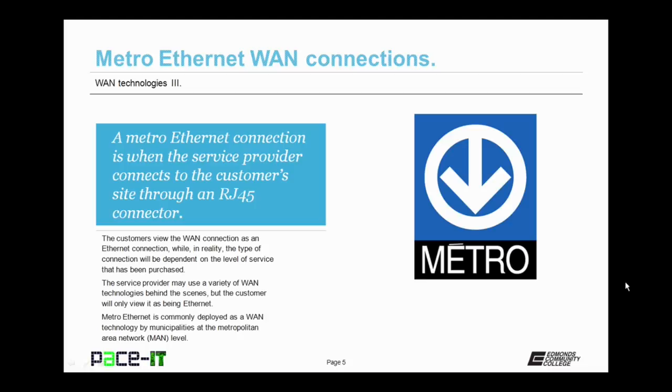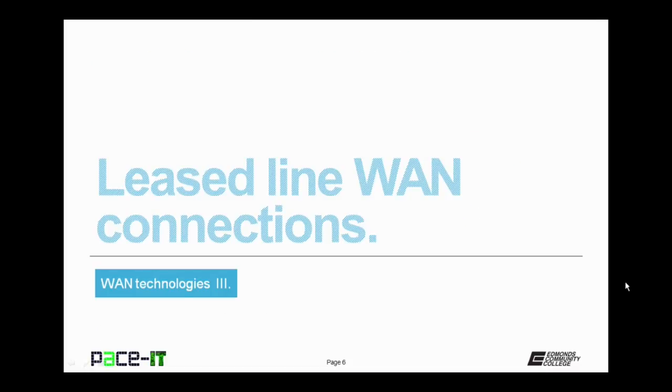The service provider may also use a variety of different wide area network technologies behind the scenes, but the customer will always view it as being an Ethernet connection. Metro Ethernet is commonly deployed as a wide area network technology by municipalities at the Metropolitan Area Network or MAN level, as in at the municipal level. It's time for us to discuss leased line WAN connections.